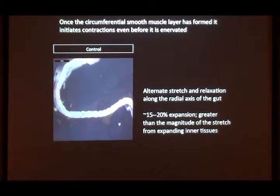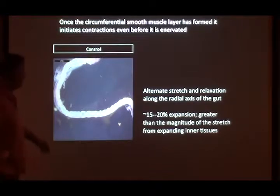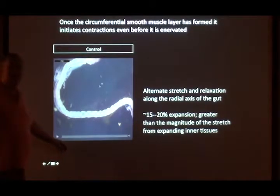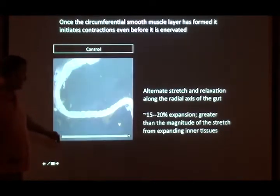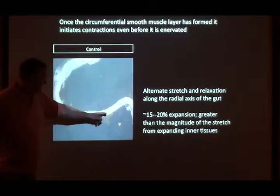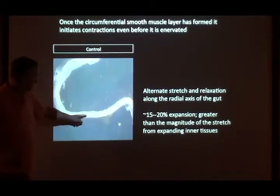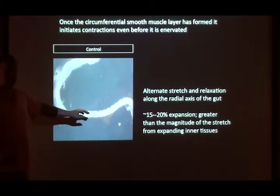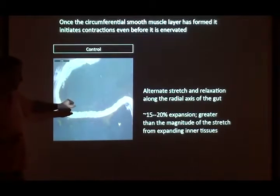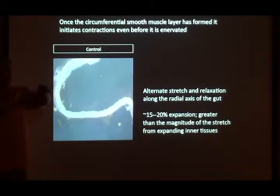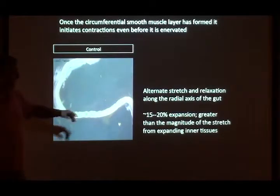We thought this might be going on in the gut because, as soon as the first muscle layer forms, it starts squeezing — it's peristaltic. It's not coordinated because the enteric nervous system isn't there yet, but you've got this cyclic stretch that's much larger than the internal expansion force. And that stretch can be manipulated because it's dependent on calcium flux.